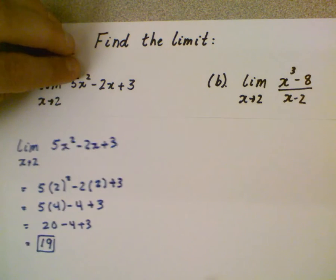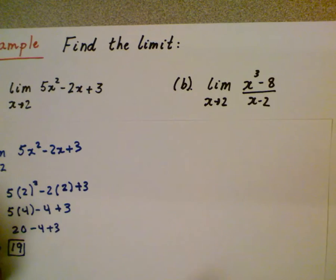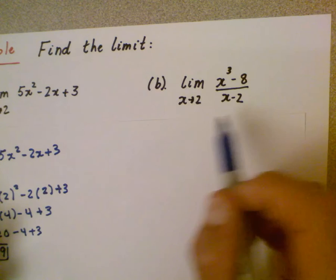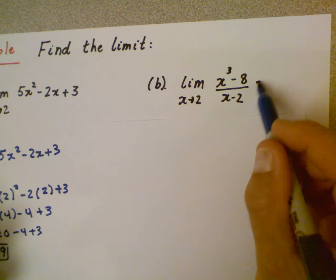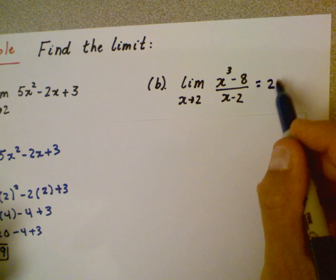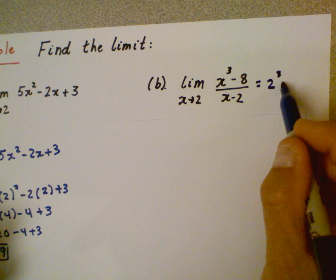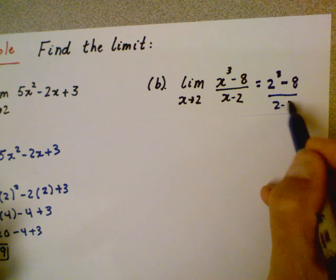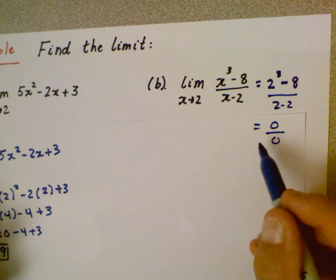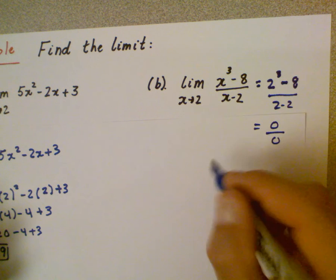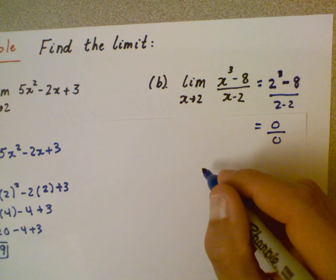Now, if we look at this second example, if I just want to plug 2 in here, I would have 2³ - 8 over 2 - 2. That is actually 0/0. That could be used with L'Hopital's rule. We're not quite there yet. So we're going to do this the old-fashioned way.